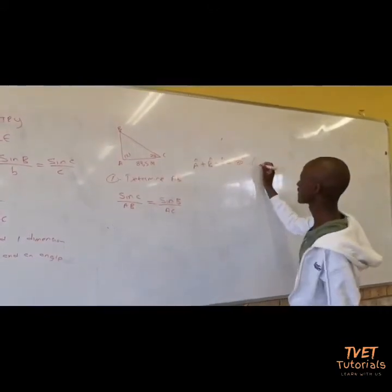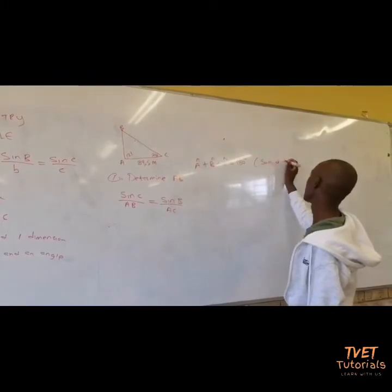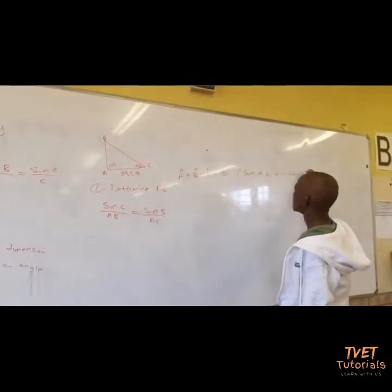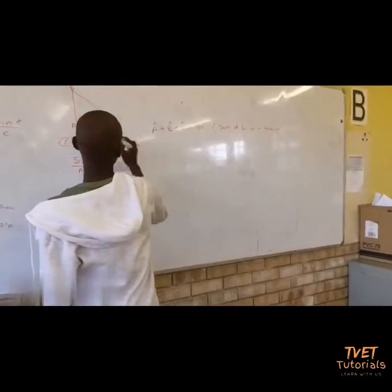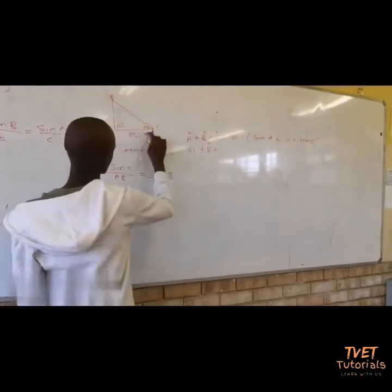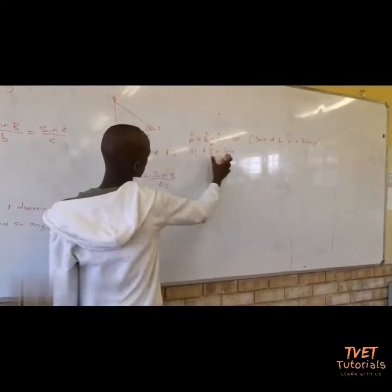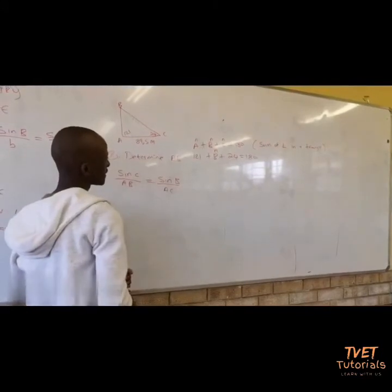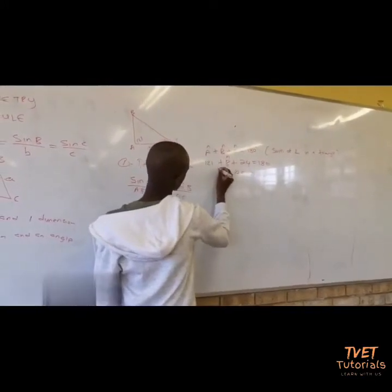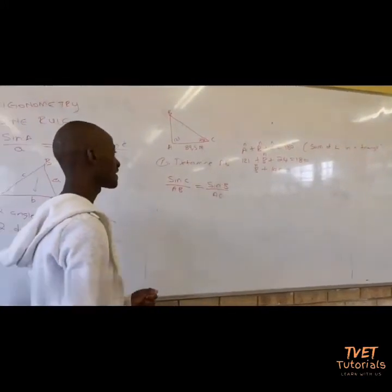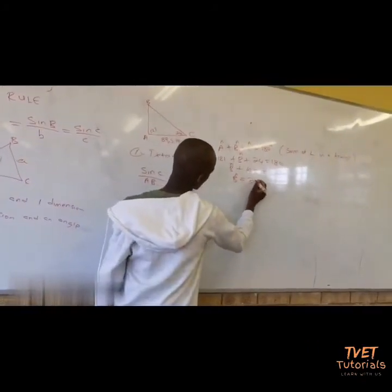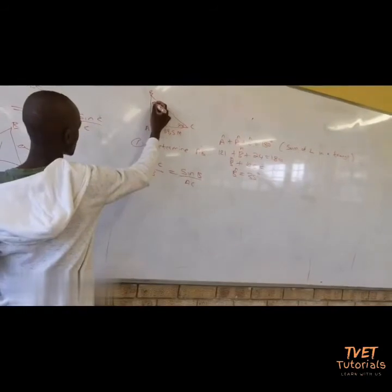Angle A plus angle B plus angle C equals 180 degrees. The reason is: sum of angles in a triangle add up to 180 degrees. Therefore, angle A is 121, angle C is 24. If you add these two it gives you 145. So 145 plus angle B equals 180 degrees. Therefore, 180 minus 145 gives you 35 degrees. So your angle B is 35 degrees.